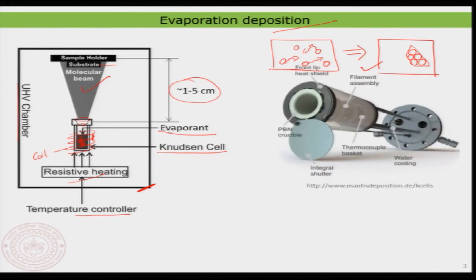This is how a typical Knudsen cell looks in a real example. It has a ceramic crucible where you place your molecule or atom. You can see the CF flange, which is connected to the vacuum chamber, so you can control everything from outside and evaporate the atoms onto the surface. Normally there is also a shutter used to control the flow of the molecular beam out of the Knudsen cell — whenever you want to stop the flow you can control it externally. That is the general description of evaporation deposition.